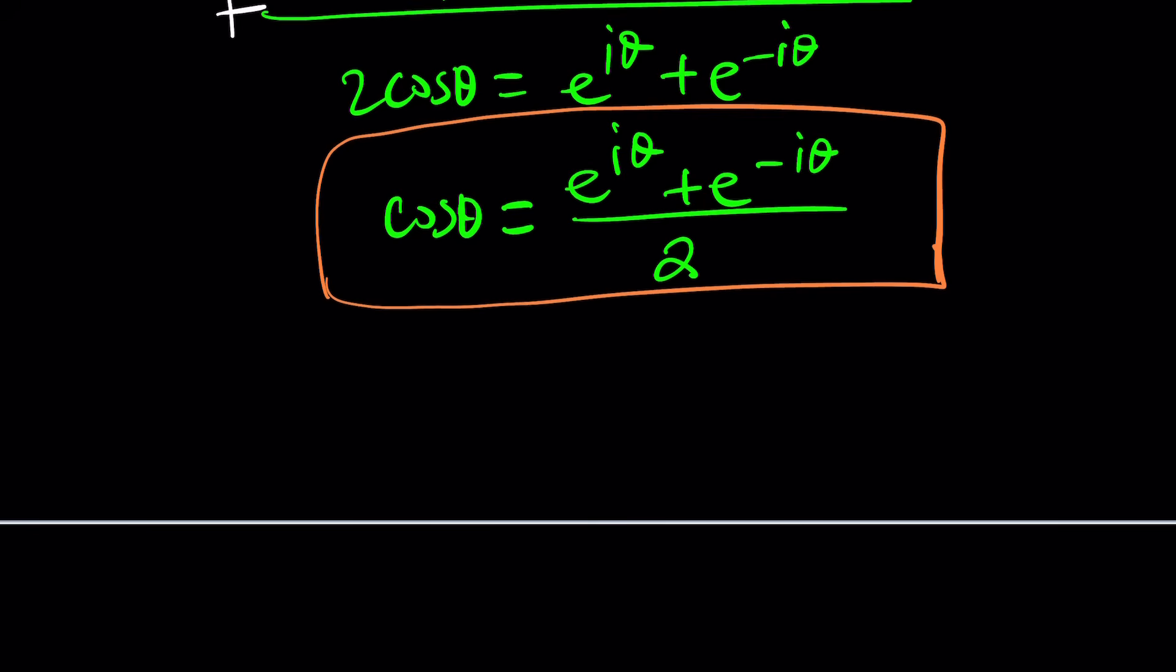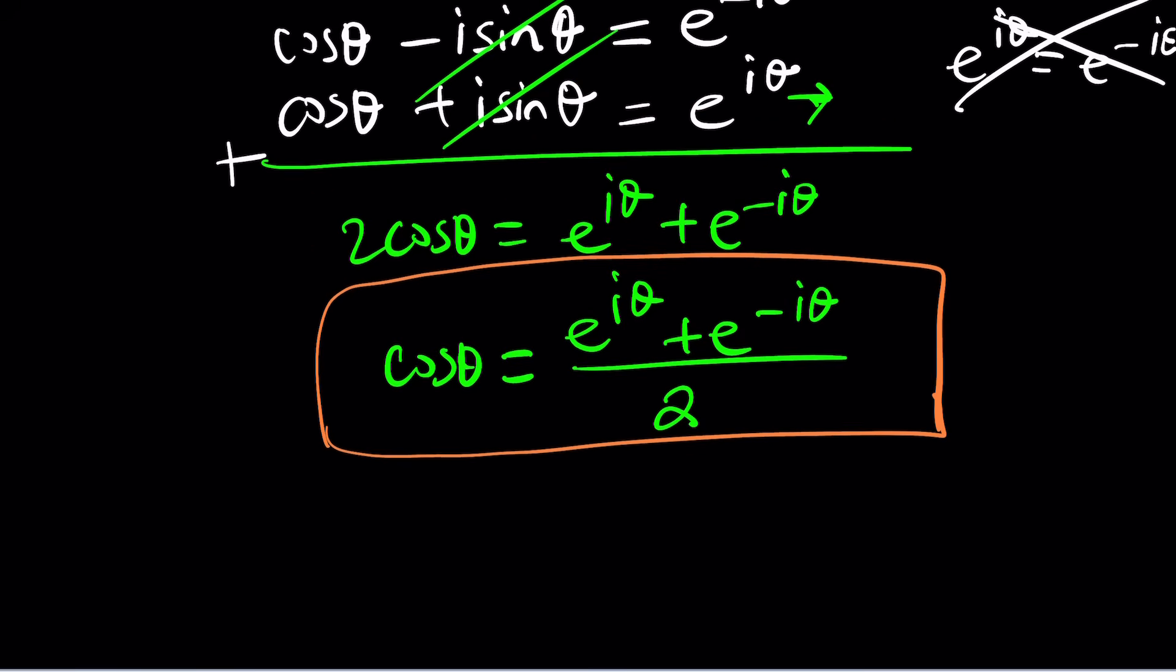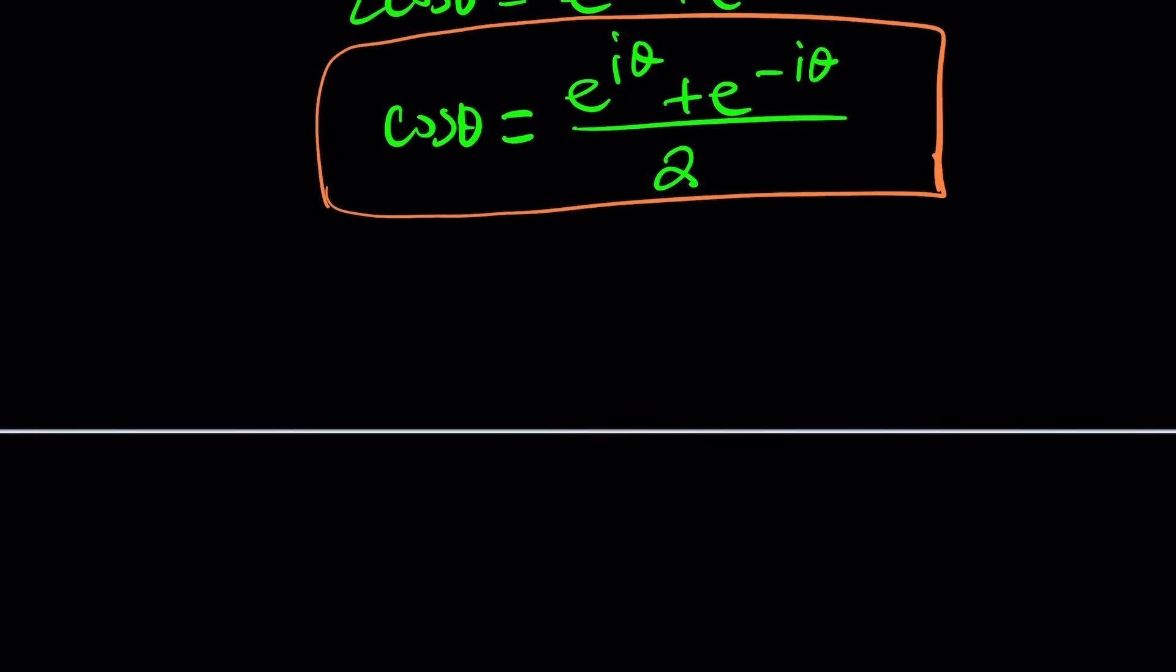Now, this is cosine θ, and now we're going to replace this with, tada, i. So we're going to replace θ with i. So that's when the miracles happen, right? Mathemagics.